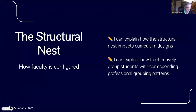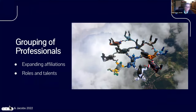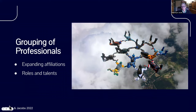We're now moving forward — we're looking at the structural nest and how we group students, but we want to look at corresponding professional grouping patterns. We want to expand affiliations. Adults thrive in situations where they're not just pigeonholed into one. How do we expand beyond perhaps being just a third-grade teacher or a high school math teacher? There are two affiliations — high school and math — but we can begin to look at the roles and talents we can build on.